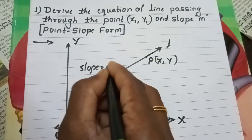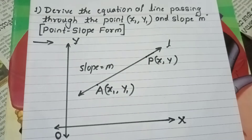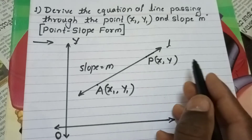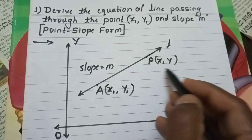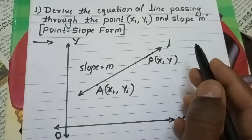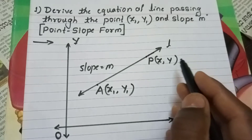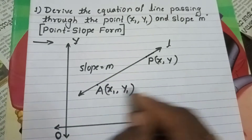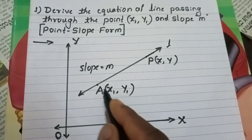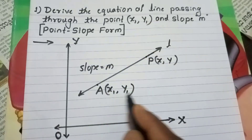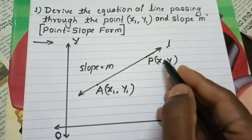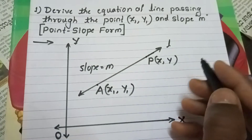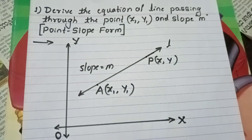Here P is any arbitrary point on the line L. The slope value is m. The line L is passing through a point (x1, y1). The arbitrary point P is (x, y).